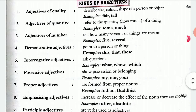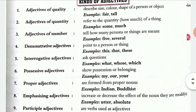Adjectives of number, as the name suggests, talk about how many — the number of a particular person, thing, or object. We can also talk about ordinal numbers here: one, two, three. For example, 'There are two students in a class' — here 'two' is the adjective. Another example: 'There were several men in the crowd' — several is the adjective. Ordinal numbers are also adjectives.